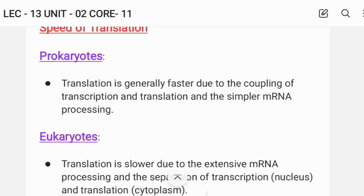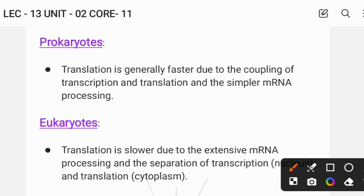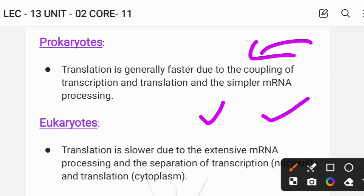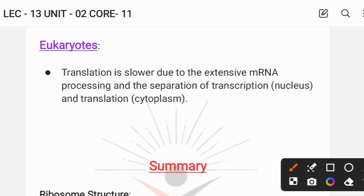Regarding speed of translation: prokaryotes are generally faster due to the coupling of transcription and translation — since the processes are coupled, translation proceeds faster. But in eukaryotes, it is slower because of further processing steps like splicing, polyadenylation, and 7-methylguanosine capping, all of which take additional time, making the overall process slower.